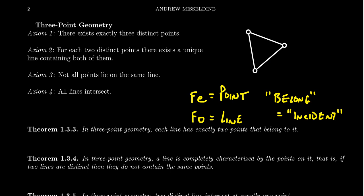As we discussed in the previous lecture, Fee-Foe theory is complete — that is, up to isomorphism, there's only one model. And therefore, this diagram is the only model of three-point geometry up to isomorphism.